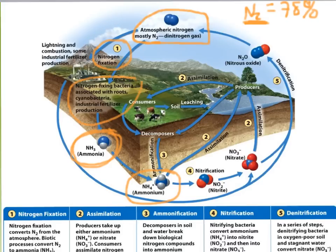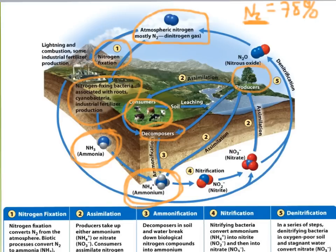Now nitrogen is in a usable form, and producers or plants on land can build their tissues as needed. That usable nitrogen is now in the tissues of plants. Consumers then eat the plant life and are able to assimilate that into their own tissues, so consumers now have the proper amount of nitrogen in their living tissues as well. Another way usable nitrogen gets into the soil is through decomposers that eat dead consumers, which then excrete excess ammonium into the soil.